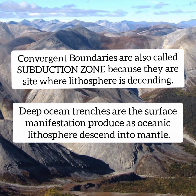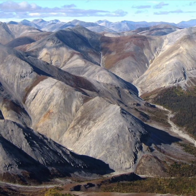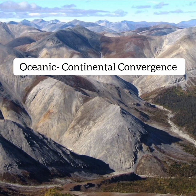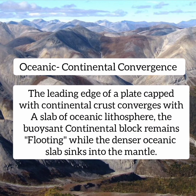Convergent boundaries are also called subduction zones because they are the site where lithosphere is descending. Deep ocean trenches are the surface manifestation produced as oceanic lithosphere descends into the mantle. At an oceanic-continental convergence, the leading edge of a plate carrying continental crust converges with a slab of oceanic lithosphere; the buoyant continental block remains floating while the denser oceanic slab sinks into the mantle.